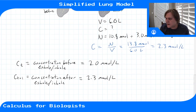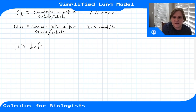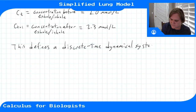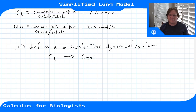What we've done here is defined a dynamical system. We started with some concentration C(t) before the breath cycle — exhale then inhale — and we ended up with a concentration C(t+1) after. This defines a discrete-time system.